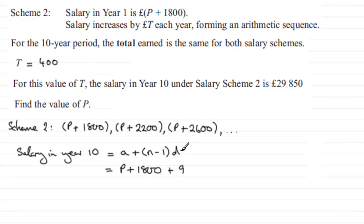Then times the common difference, and the common difference is that we're going up in steps of 400 pounds. So it'd be 9 times 400. And if we simplify this, then we've got P plus 1,800 plus 3,600...